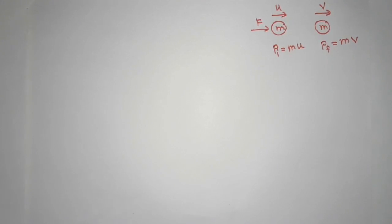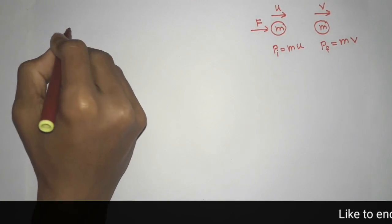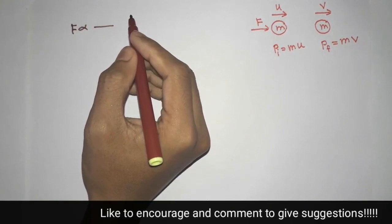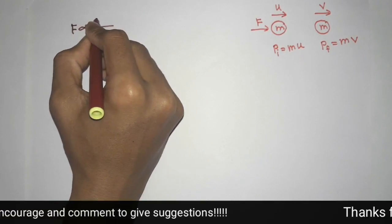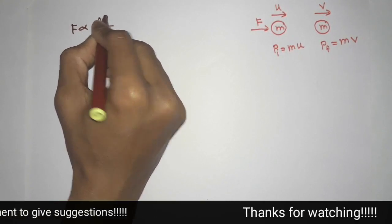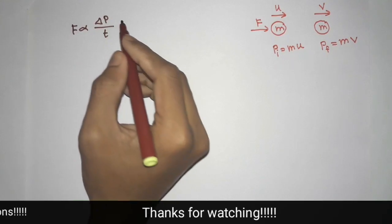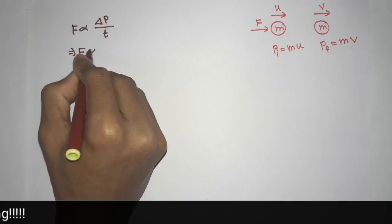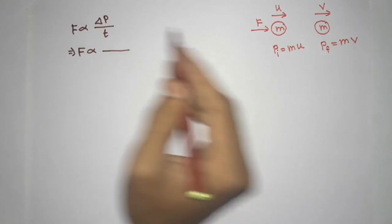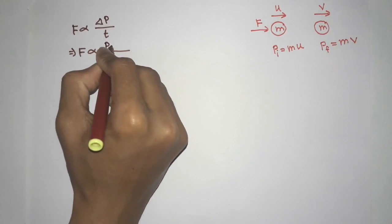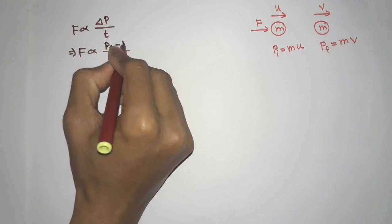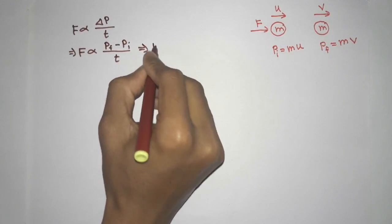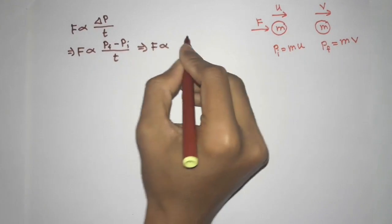According to Newton's second law of motion, force is directly proportional to the rate of change of momentum. Now, what is the rate of change of momentum? It is delta-p divided by t, where p is the momentum. This implies force is proportional to delta-p, which is p-final minus p-initial, divided by t.